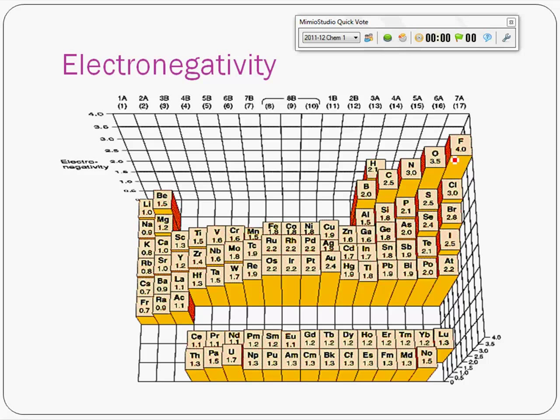Fluorine is the key to the entire electronegativity subject. Fluorine is the most electronegative. Which one's the least electronegative?